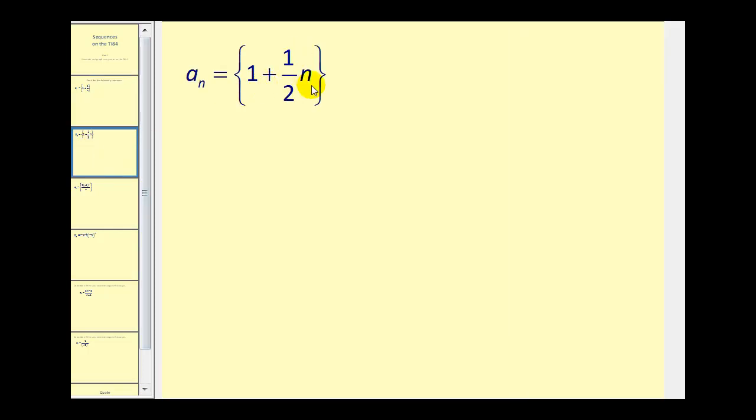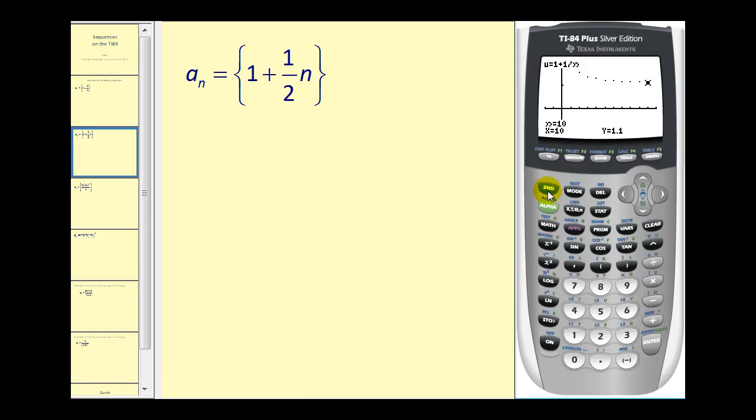Here we have one plus one-half n. Let's go back to the home screen. Let's clear this and review it one more time. We're going to press second, list, right arrow once to ops. Press option five for sequence.